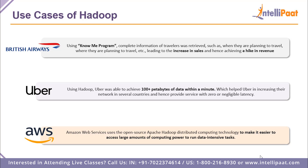Next is Uber, one of the world's most renowned ride providers. Using Hadoop, Uber was able to process over 100 petabytes of data within a single minute — remember the six-hour two-terabyte example? Now think about 100 petabytes. This helps Uber expand their network in several countries and provide service with very little delay. Amazon's AWS also uses Apache Hadoop technology to access large amounts of computing power and run data-intensive tasks for all their clients.